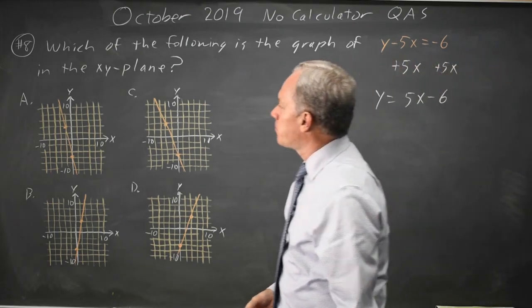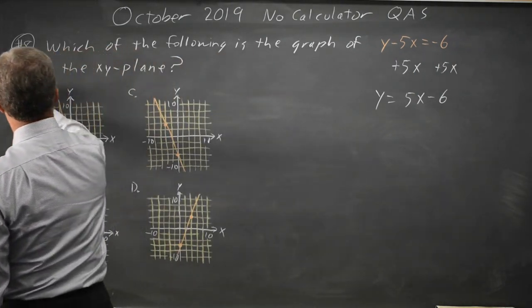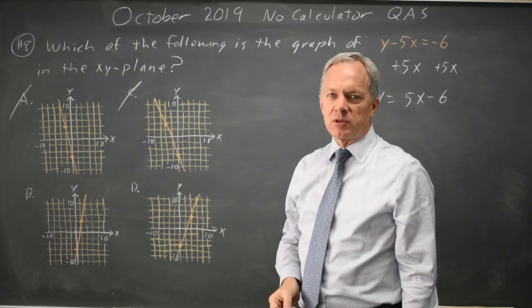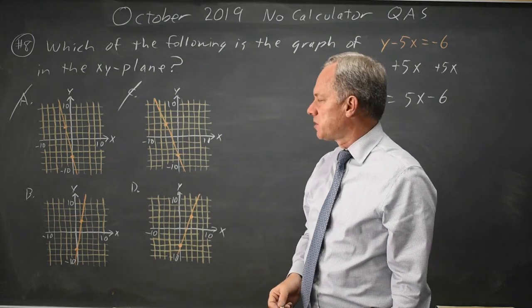So the slope should be positive, which rules out choices A and C. A and C decrease as you go to the right. Positive slopes always increase as you go to the right.